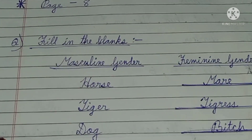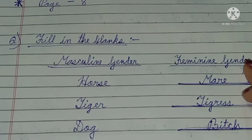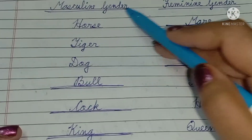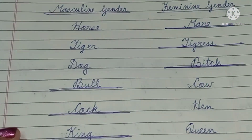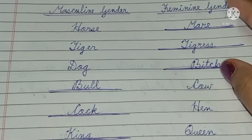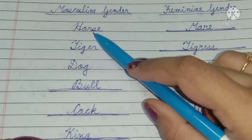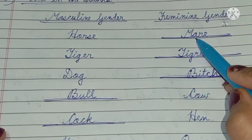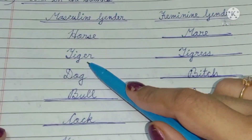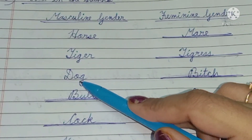Fill in the blanks. What we do is gender — masculine gender and feminine gender. You have horse — mare. Tiger — tigress.